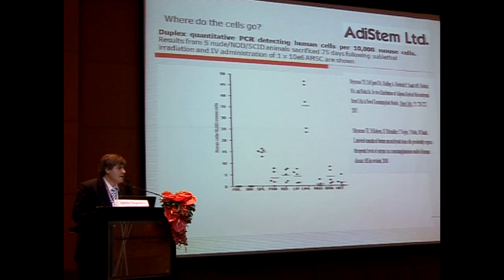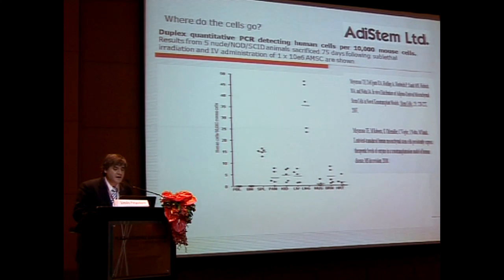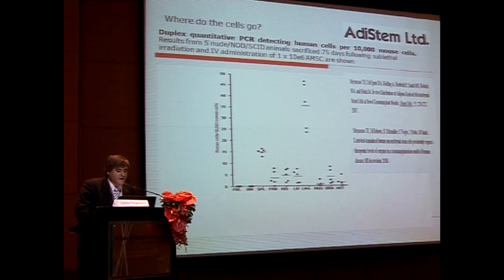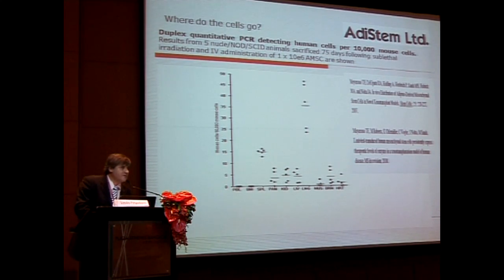If we take these stem cells and inject them into somebody, where do they go? There are some very good studies initially done in nude mice, where they took adipose-derived mesenchyme stem cells from humans and administered them intravenously into mice, then checked where these cells were 75 days later — quite easy, you just look for human DNA in a mouse. In a publication from 2007 and another in 2008, 75 days later they could find these cells in the spleen, pancreas, kidney, and liver. A lot were in the lung because these cells are slightly bigger and get trapped there in an intravenous infusion. But they also found them in skeletal muscle and, more importantly, in the brain — suggesting these cells can cross the blood-brain barrier — and in cardiac tissue.